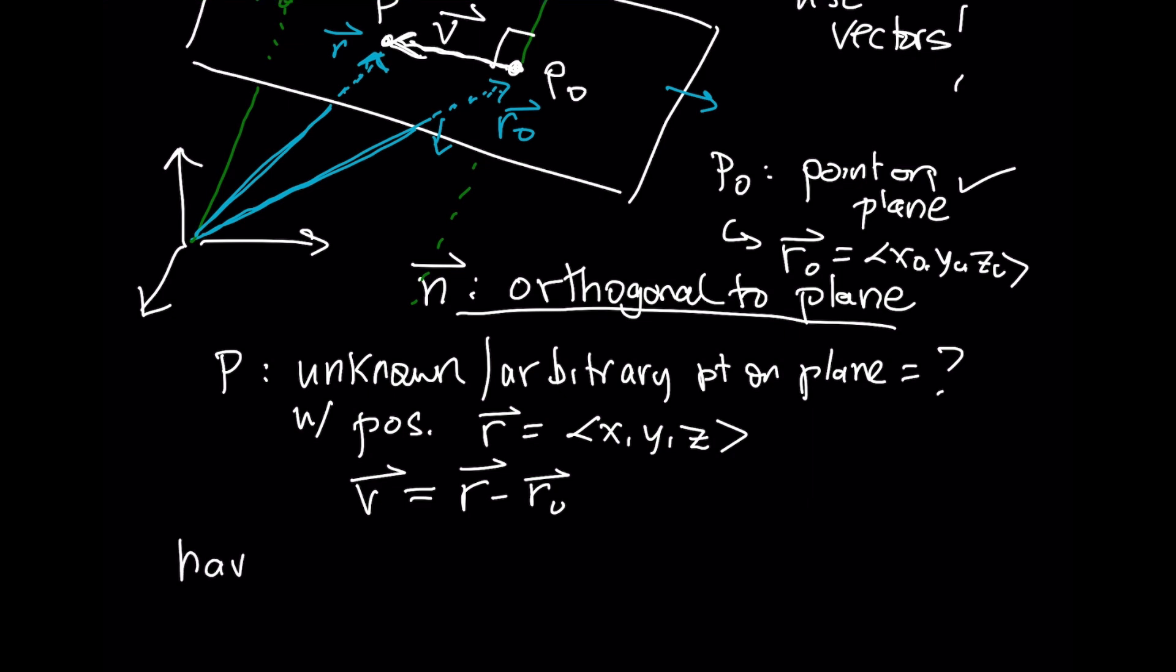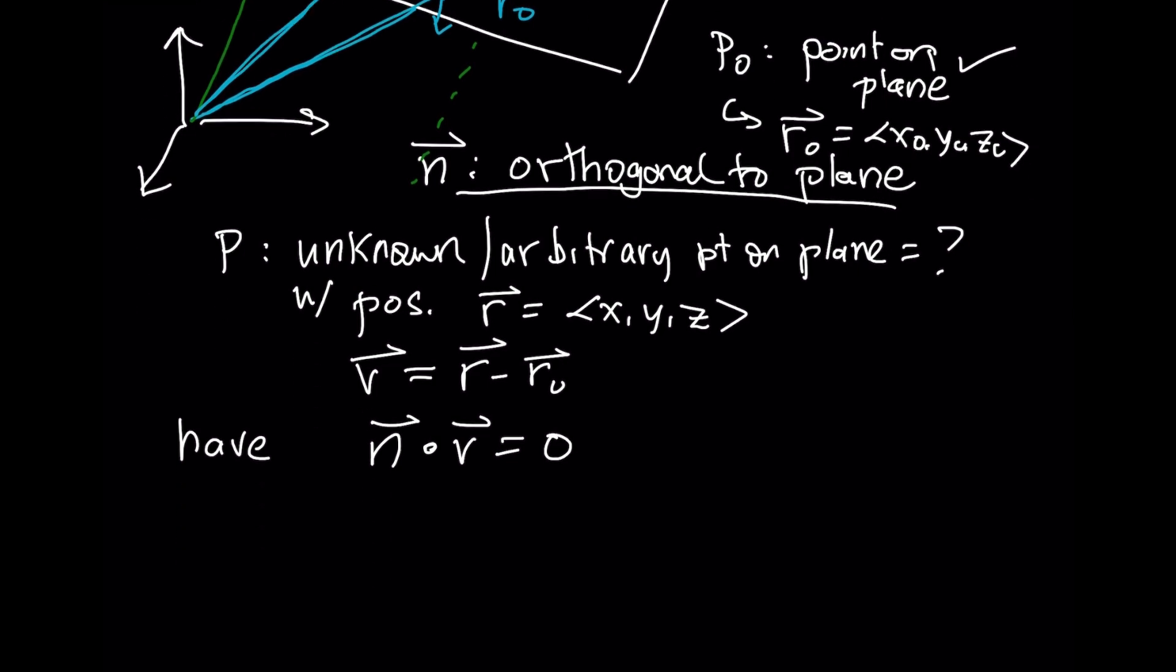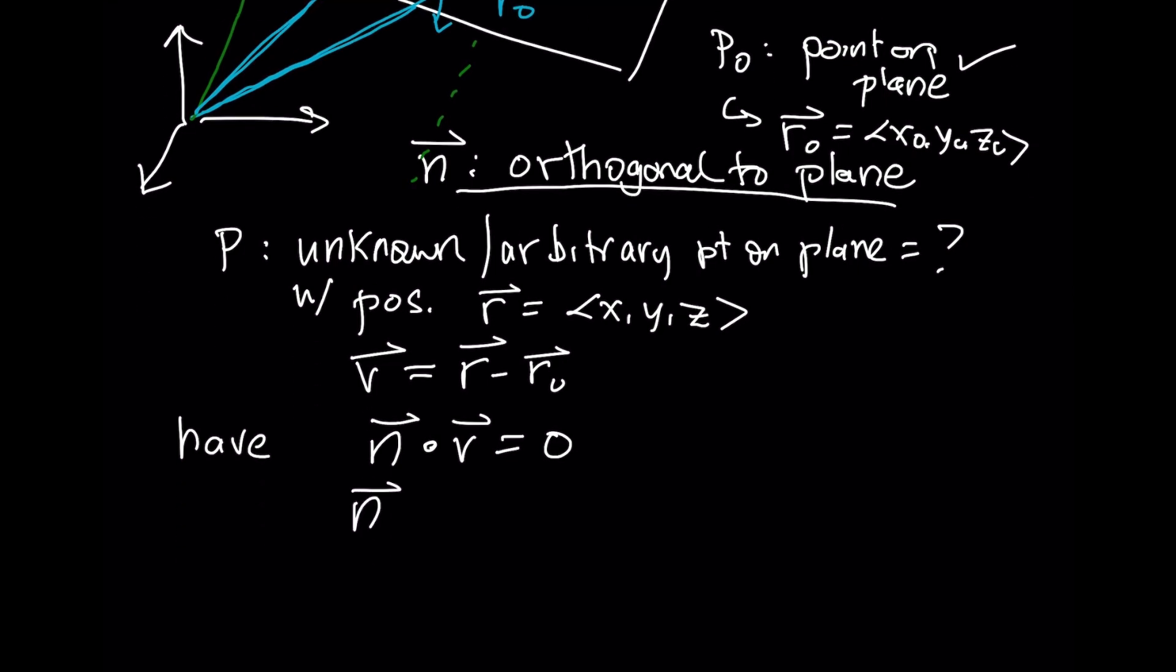N dotted with V has to be 0. Another way to write this is N dotted with (R - R₀) has to be equal to 0. And this is the equation of a plane.